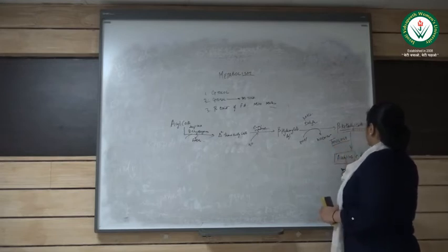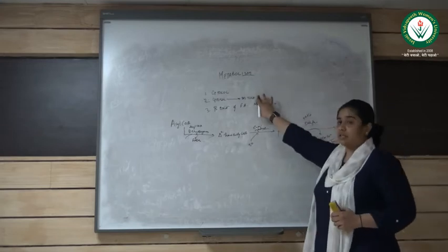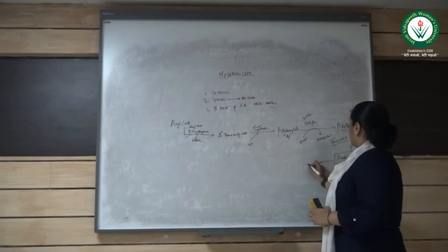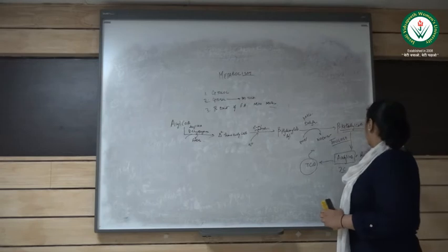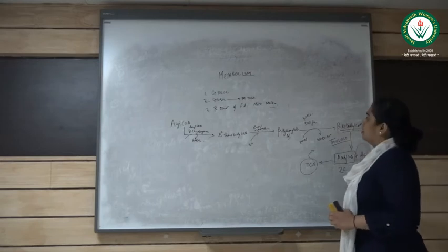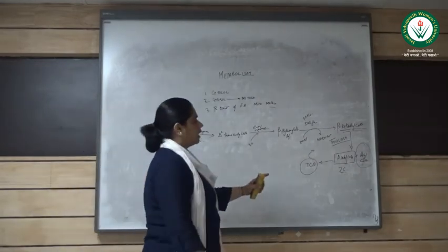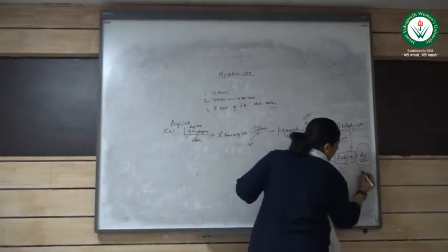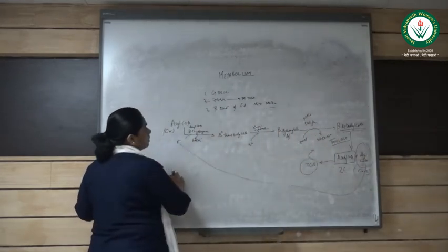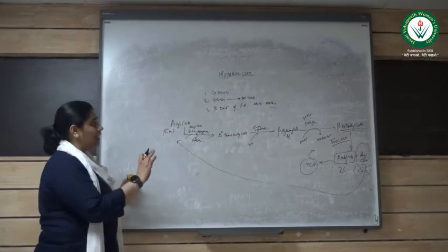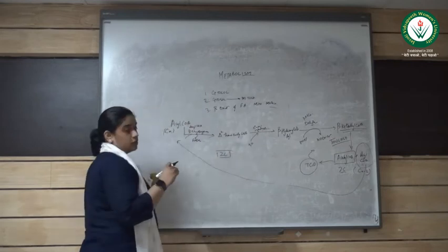Now this acetyl coenzyme A is the two carbon form taken out from the fatty acid chain. This will enter into a TCA cycle and will produce more and more energy. While this acyl coenzyme A we started here with the C_n carbon and here we get the acyl coenzyme of C_n-2. This again will go back and again do the same beta-oxidation reaction until there will be only two carbons left of the fatty acid chain.